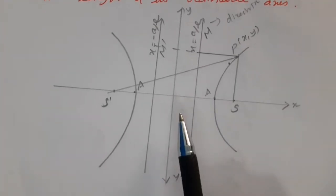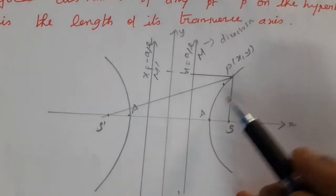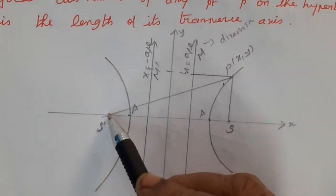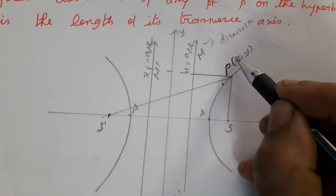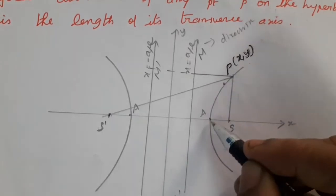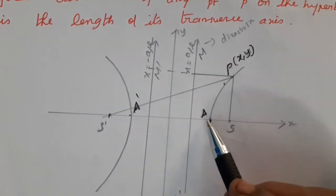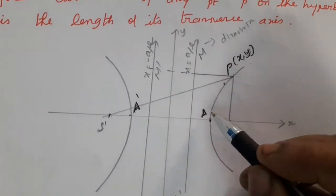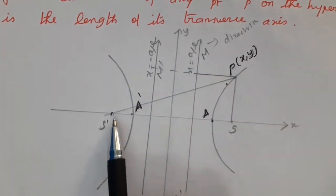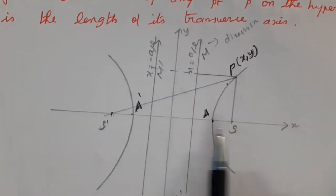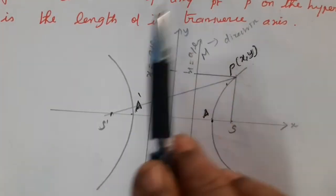See the diagram carefully. Draw the diagram: this is the x-axis and y-axis. S and S dash are the two foci. Let P be any point (x, y) on the hyperbola. A and A dash are the vertices of the hyperbola. We are going to prove that the length of the transverse axis equals the absolute value of the difference of the focal distances.